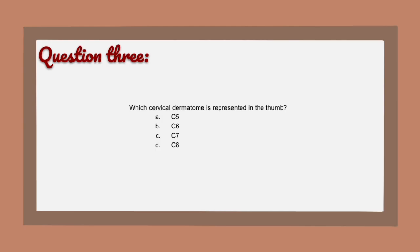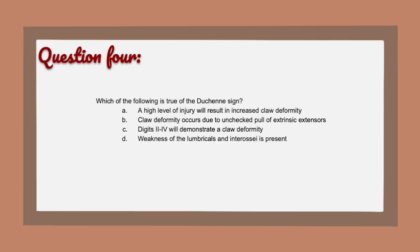Question 3: Which cervical dermatome is represented in the thumb? A) C5, B) C6, C) C7, D) C8. Question 4: Which of the following is true of the Duchenne sign? A) A high level of injury will result in increased claw deformity.